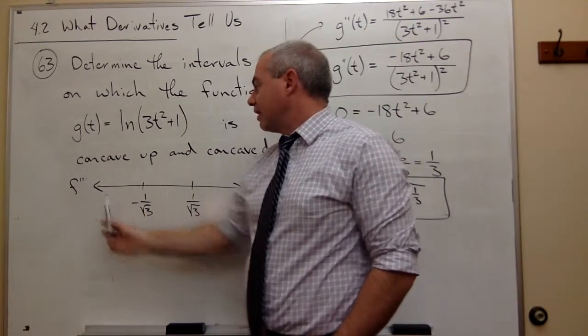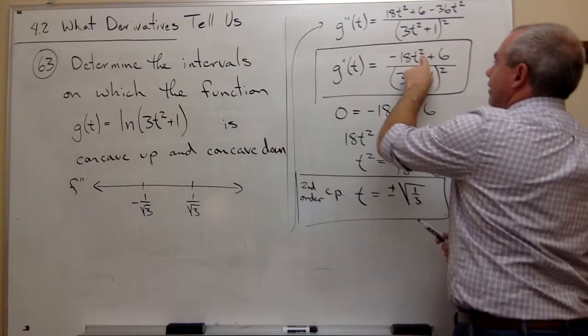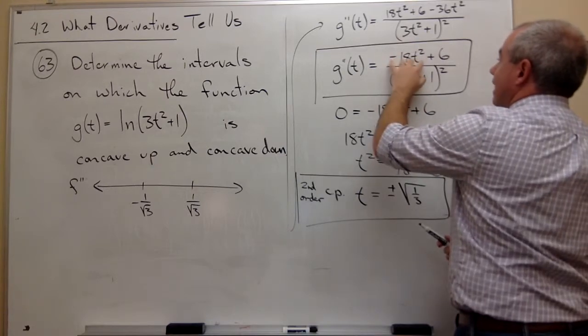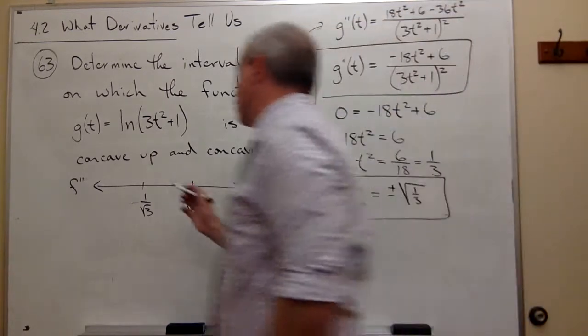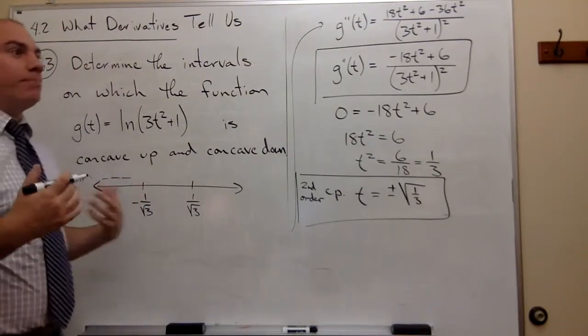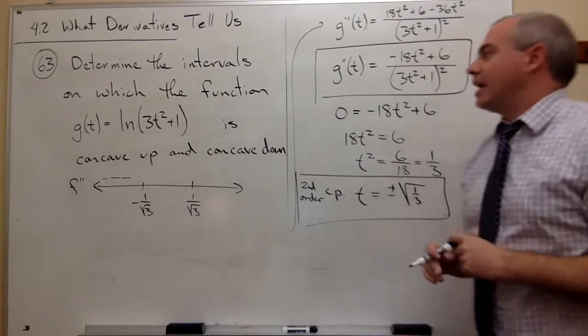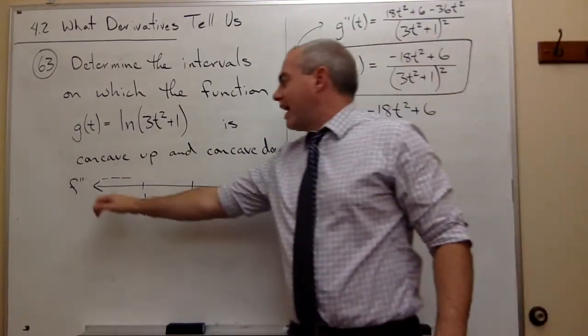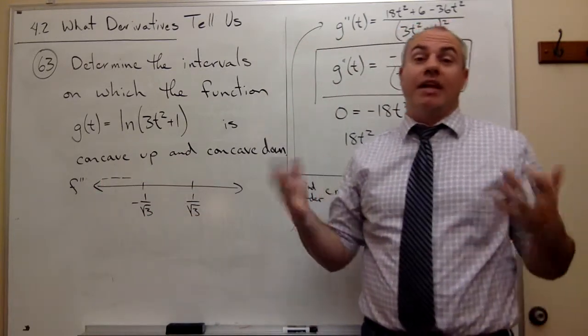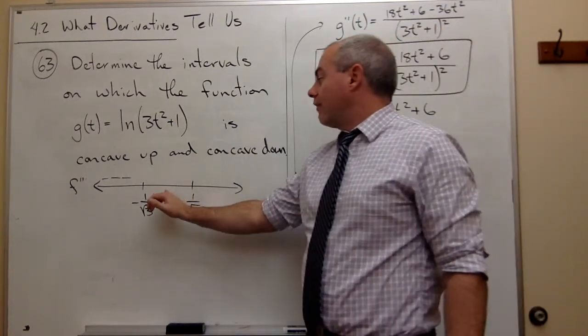So if I'm testing something way over here, like let's take something big like -10. Well, -10 squared is 100. 100 times -18 is a big negative number, plus 6 is still negative. So things over here must be negative. So notice I didn't actually plug it in by hand. I just used my head for a second and said, if I have a number over here, is it going to be positive or negative? And it's quite clearly negative, so I don't need to do a lot of work.